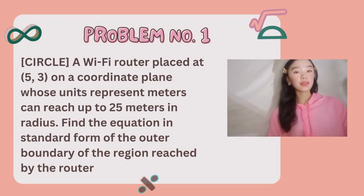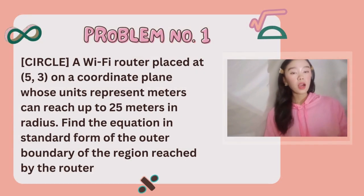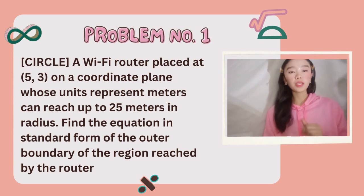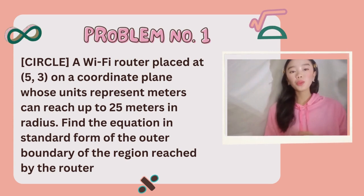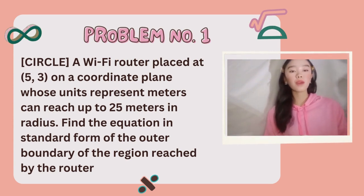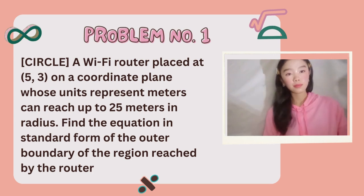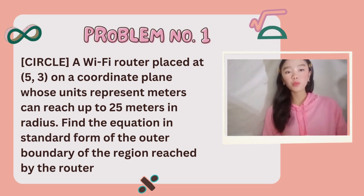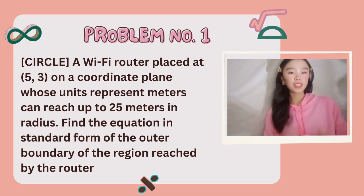Problem number one: a Wi-Fi router placed at (5, 3) on the coordinate plane, whose units represent meters, can reach up to 25 meters in radius. Find the equation in standard form of the outer boundary of the region reached by the router.